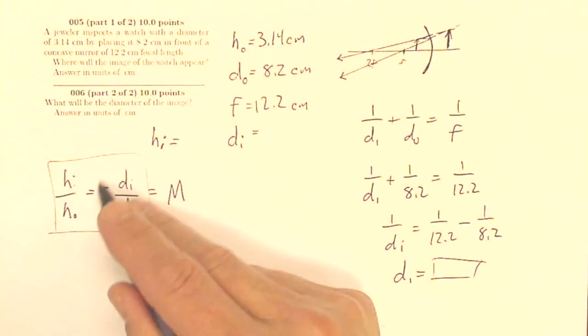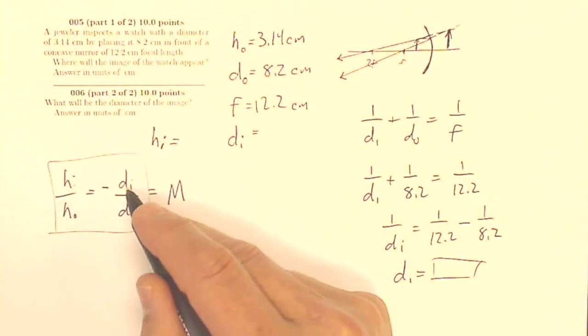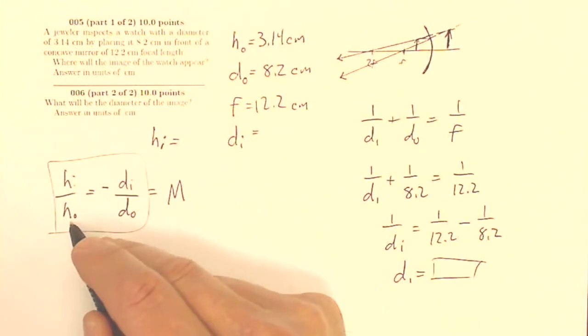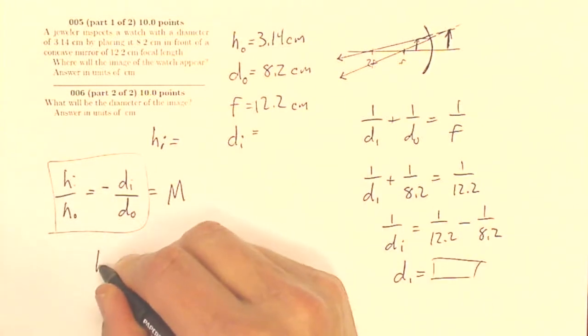This will end up being negative. Sorry, this will end up being positive. So the negatives will cancel out. I know the height of the object is 3.14. I'm going to end up with a positive height of the image. So plug in your numbers that you've got here, and you'll wind up with a positive hi.